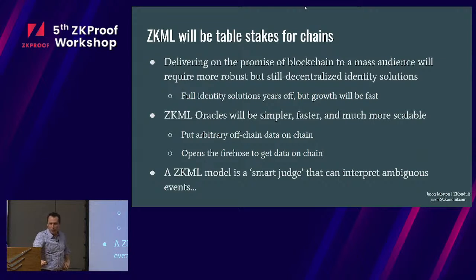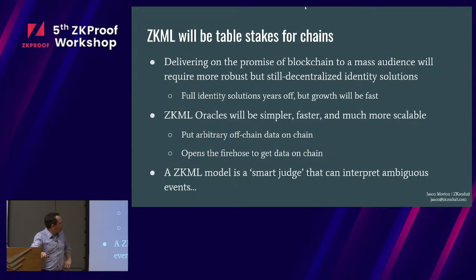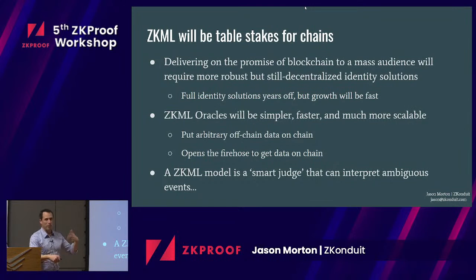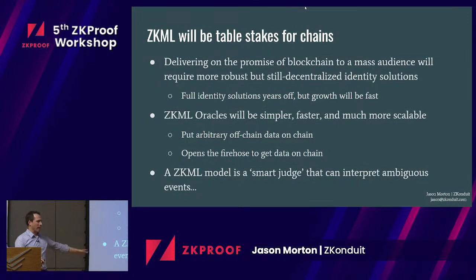I really believe that zero-knowledge machine learning is going to be table stakes over the next few years. Because of the identity solution — a decentralized identity solution that lets you control your smart contracts or wallet the same way you control ordinary assets, where you can talk to your banker and recover your funds even if your house burned down — that's something we can enable in a decentralized way using this technology. This oracle idea really opens the fire hose, and the model is a smart judge you can use to interpret events.